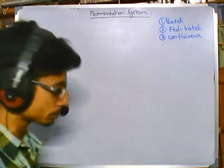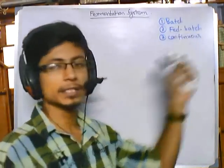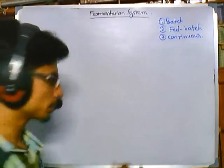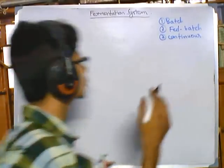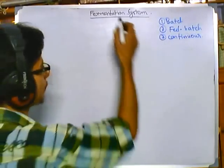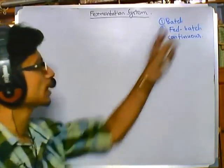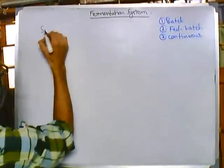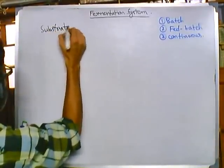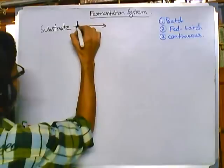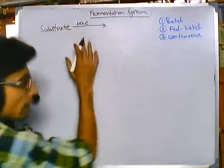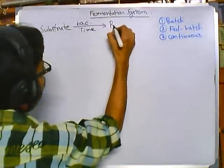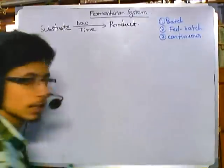Batch, fed-batch, and continuous — the name suggests most of the part of the culture process. In fermentation systems, whatever we are doing, we are fermenting products. What do we mean by fermentation? We give some substrate, provide it to bacteria, allow it some time, and it will convert the substrate into the desired product.